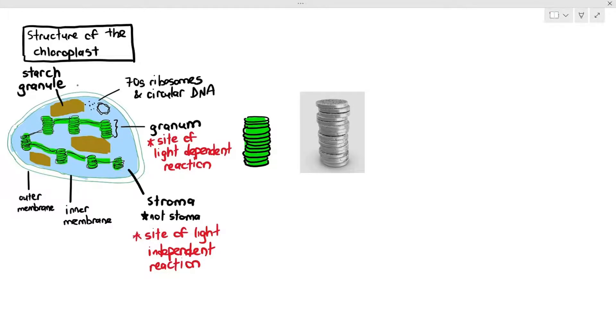So, what exactly the granum is, is that it is a stack of something known as thylakoid. You can imagine the thylakoid to be like a single coin. And when you join the thylakoid together, they become something known as granum.